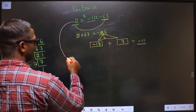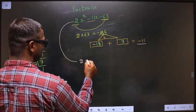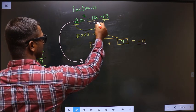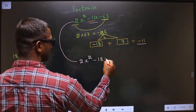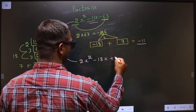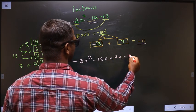Now this will change. In place of minus 11x, now I write this: 2x square minus 18x plus 7x minus 63.